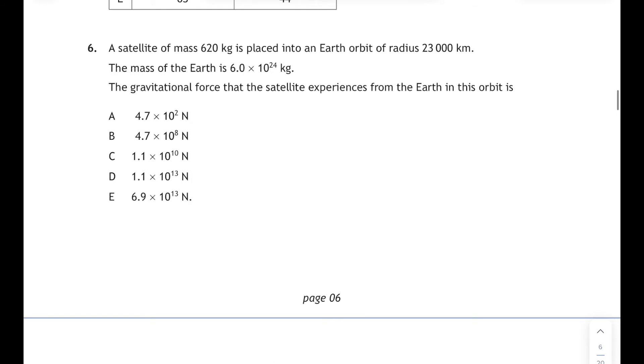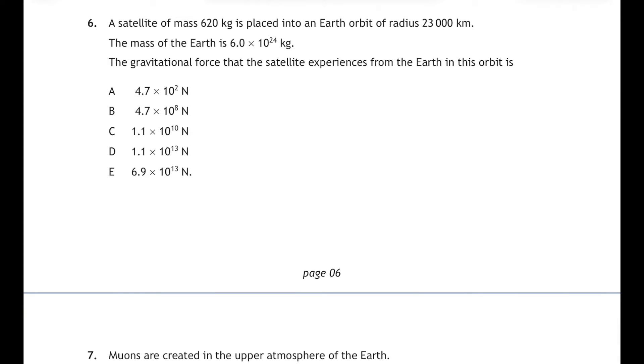On we go then. Question 6. A satellite of mass 620 kilograms is placed into an earth orbit of radius 23,000 kilometers. The mass of the earth is 6 times 10 to the 24 kilograms. The gravitational force that the satellite experiences from the earth in this orbit is... well we will need our universal law of gravitation relationship, that's F equals G M m over r squared. And let's just sub all those values in because it's the force we're wanting to calculate. So big G from your data sheet is 6.67 times 10 to the minus 11, the mass of the earth 6.0 times 10 to the 24, and the mass of the satellite is 620 kilograms, and that's all over the radius squared. Now take care here because sometimes they'll tell you the height of the satellite's orbit above the surface of the earth and you have to add the height to the radius of the earth.